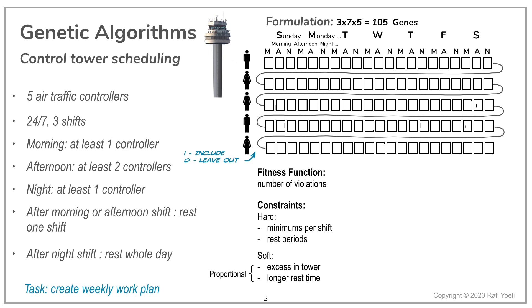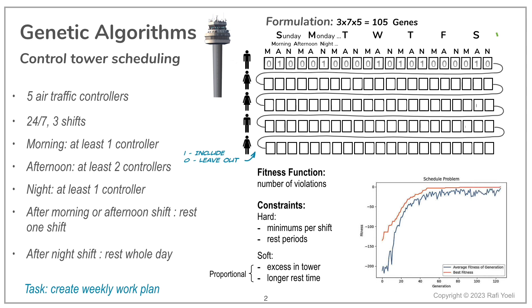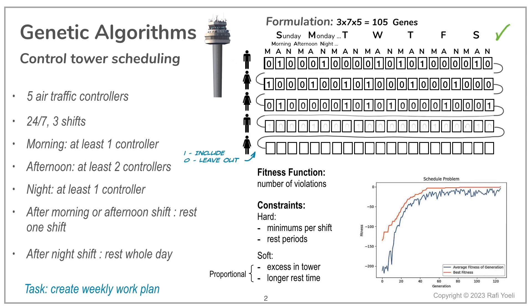We're done defining the chromosome, fitness function and constraints, and it's time to run the algorithm. Here's the run on the right. The results seem to be good and we have a plan. The truth is, we didn't get any violations in this run.